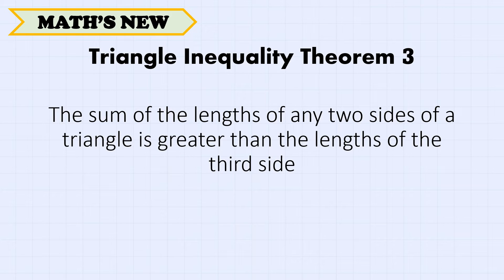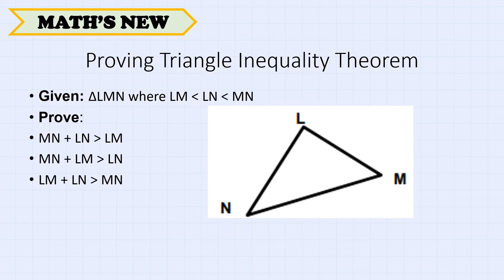Triangle Inequality Theorem 3 states that the sum of the lengths of any two sides of a triangle is greater than the length of the third side. Given triangle LMN where LM is less than LN and LN is less than MN, we will prove that MN plus LN is greater than LM, MN plus LM is greater than LN, and LM plus LN is greater than MN.